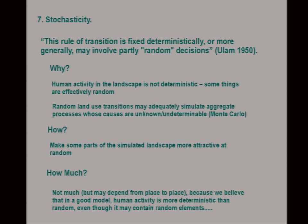Stochasticity. This is Ulam's partly random decisions. Human activity in the landscape is not completely deterministic — either things are random, or we have so many unknown causes that we effectively have a kind of randomness.